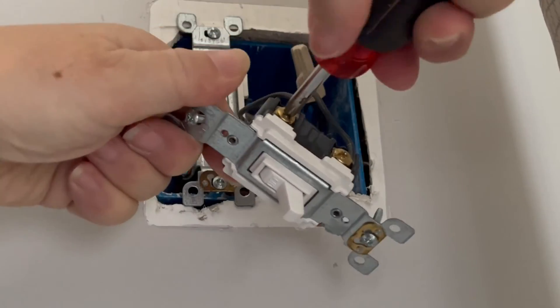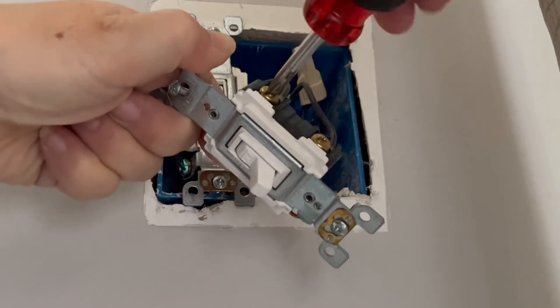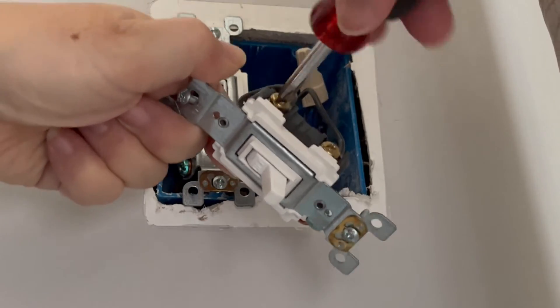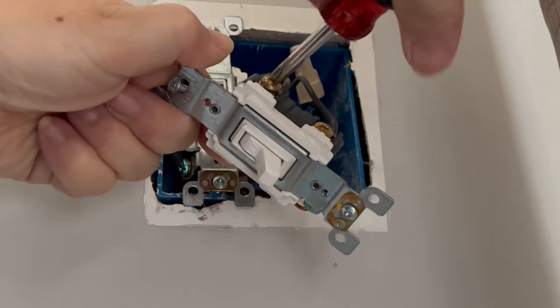Take off the two black wires, which are the hot wires, and the copper wire, which is the ground wire, from the light switch.